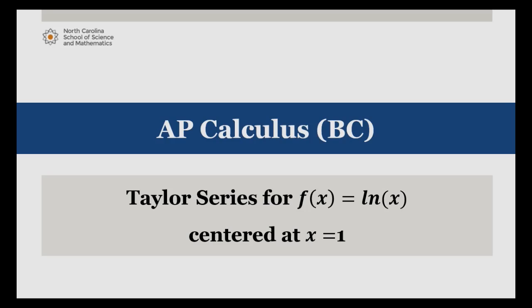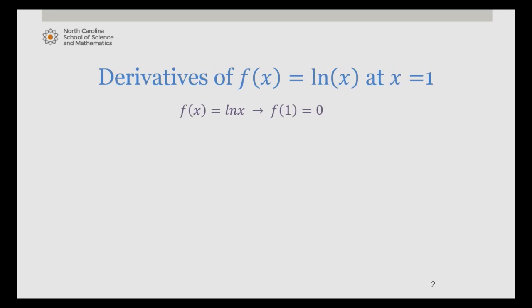We begin by finding several derivatives of the natural log of x. The zeroth derivative is natural log of x, and if we evaluate that at 1, we get 0.